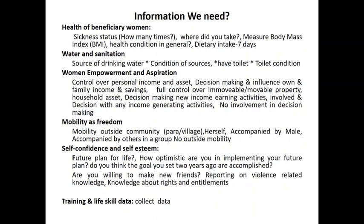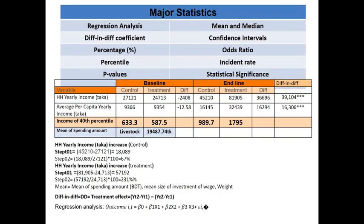Different types of statistical analyses were used to assess the effectiveness of the program, including difference-in-differences regression analysis, percentage, percentiles, p-values, mean, median, confidence intervals, odds ratios, incident rates, and statistical significance. The video table provides examples of what information was analyzed and which statistics were used.